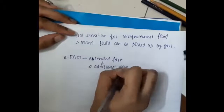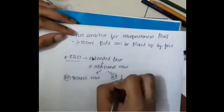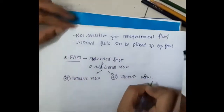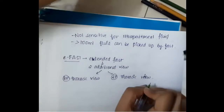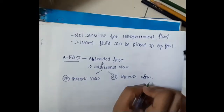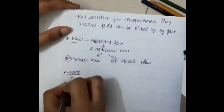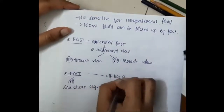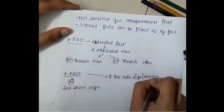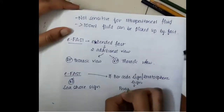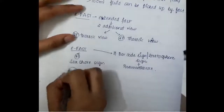E-FAST is Extended FAST, where in addition to the normal 4 FAST views — pericardiac, perihepatic, perisplenic, and pelvic — we also perform 2 additional views: right thoracic view and left thoracic view. In E-FAST, normally a seashore sign is seen, but if there is pneumothorax, then a barcode sign or stratosphere sign is seen.